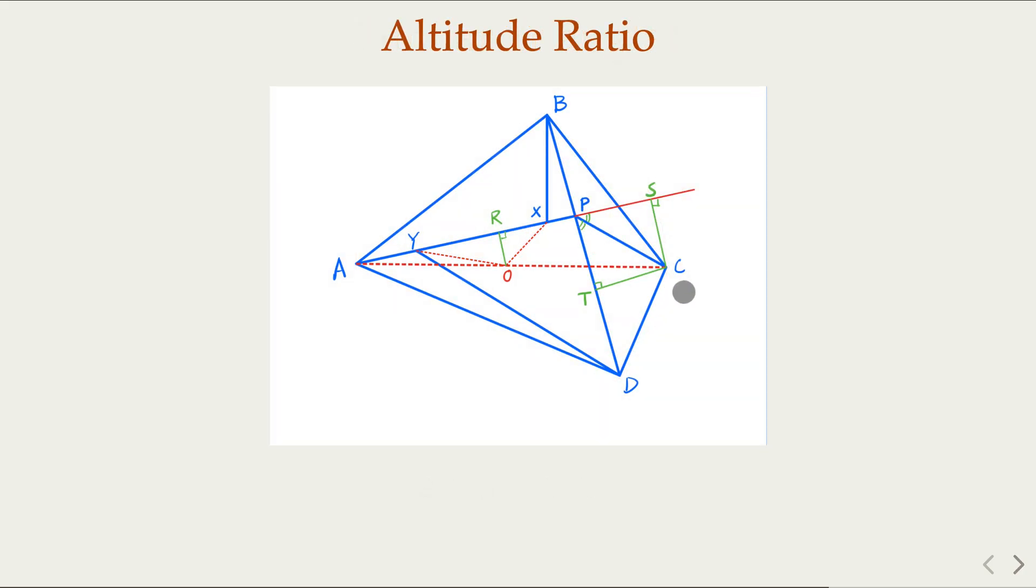CP is the bisector of this angle. We're extending line AP. We construct CS perpendicular to the line, and CT perpendicular. Since this is an angle bisector, we know that CS equals CT. There's a typo here - this should be CS.